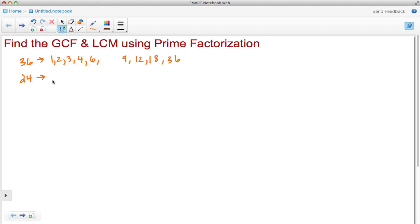The factors of 36 are as follows. Now as to the factors of 24: 1 and 24, 2 and 12, 3 and 8, 4 and 6.